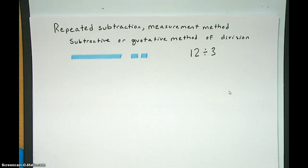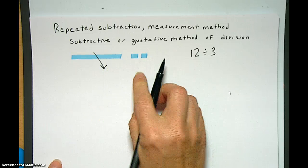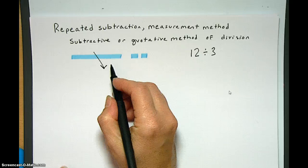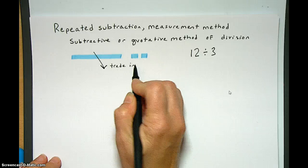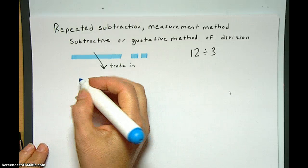So in order to draw what we do here, we've got to trade this in since we can't actually repeatedly subtract 3s from this because this is a 10. So we're going to trade this in. We're going to trade it in for all 1s. So rather than 10 and 2 ones, we're going to have 12 ones.